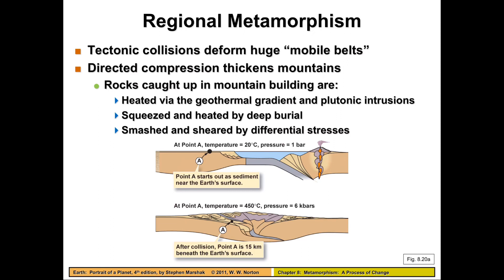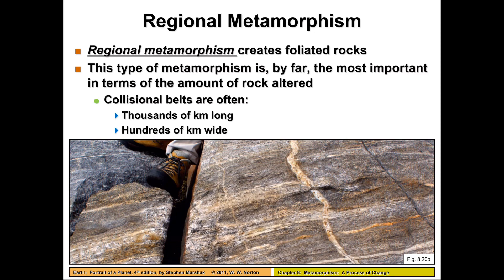Regional metamorphism happens over a very large region or area. This is mostly where two continents collide into each other, generating an extreme amount of pressure, which definitely creates foliated rocks. If you were to go hiking in the Appalachians, you would see everything from shale to gneiss in the mountain belts — and really, in any mountain belt.